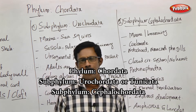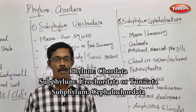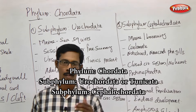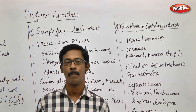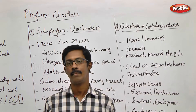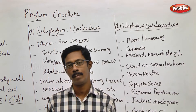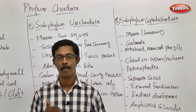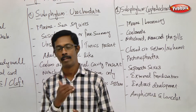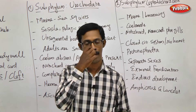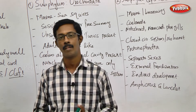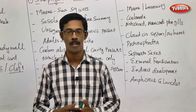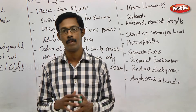Dear students, in our Kingdom Animalia class, we will talk about the characters and how to classify. We will talk about invertebrates, how to include phylum. We will talk about protozoa peripheral, we will talk about hemi-chordata, we will talk about complete details.